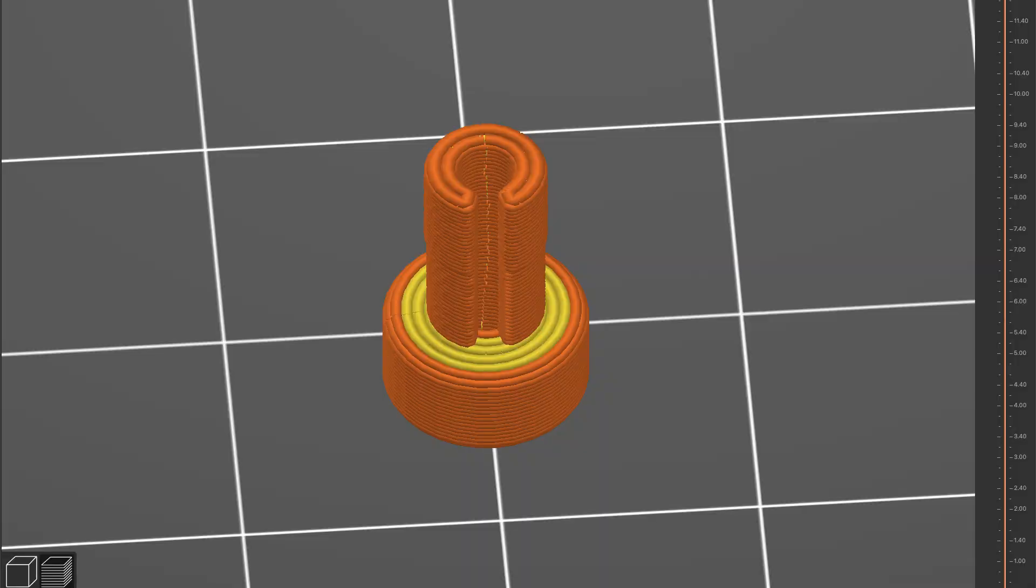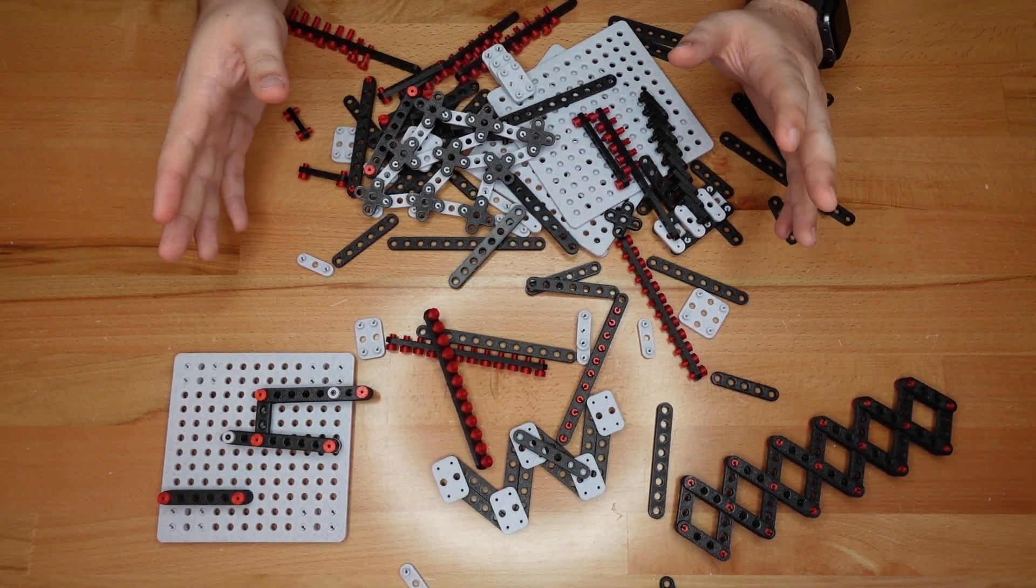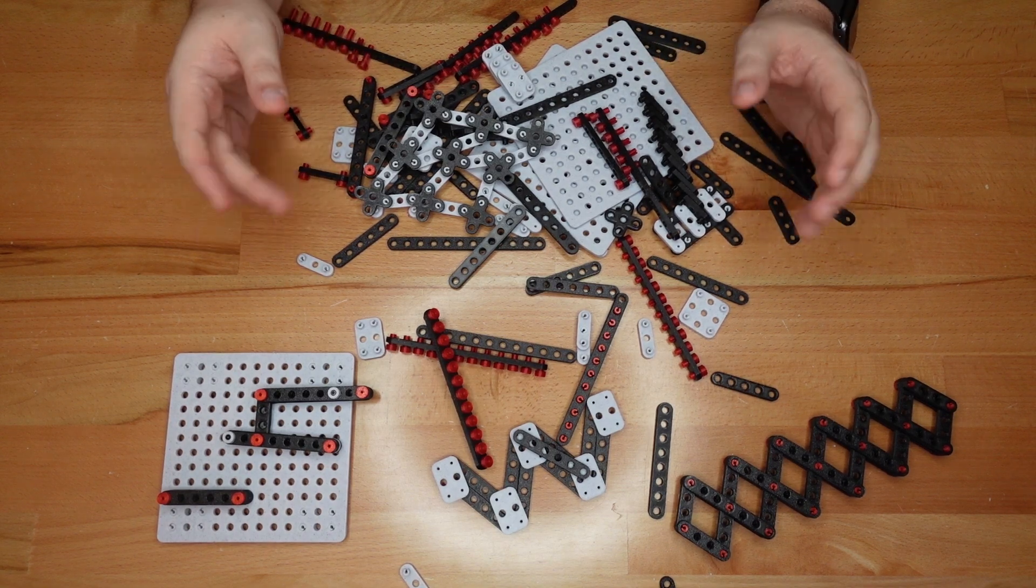For the pins to work well, their outer wall needs to be very smooth and consistent. In order to achieve that, manually place your print seam inside the pin. Also, don't rush the print speed. How quickly you get a part won't matter if that part is unusable.